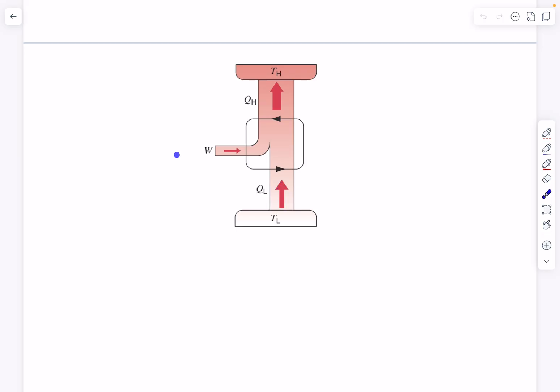We can define a certain efficiency in this case, which is known as the coefficient of performance. Just as we define any other efficiencies, this is basically what we want divided by what we pay for.